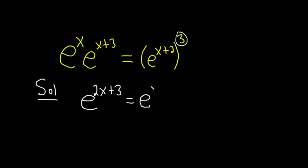It's really e to the 3 times x plus 2, but x plus 2 needs parentheses because we're multiplying 3 times this term, right? We're looking at it as one term.